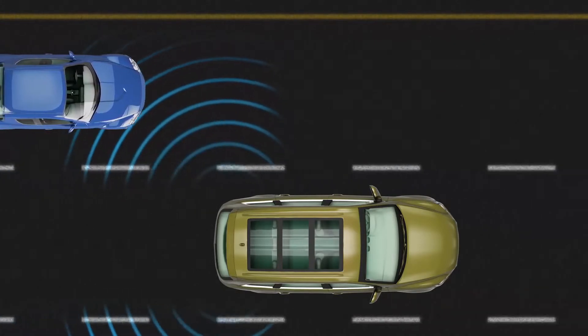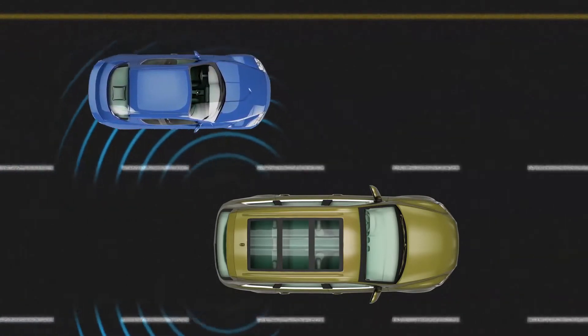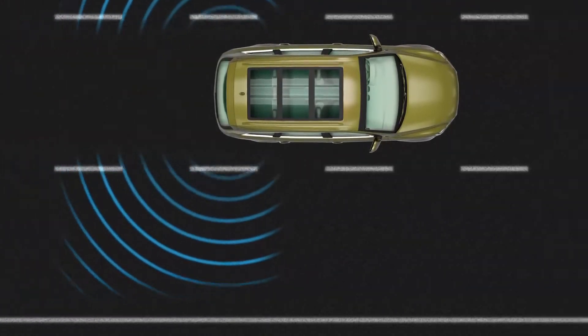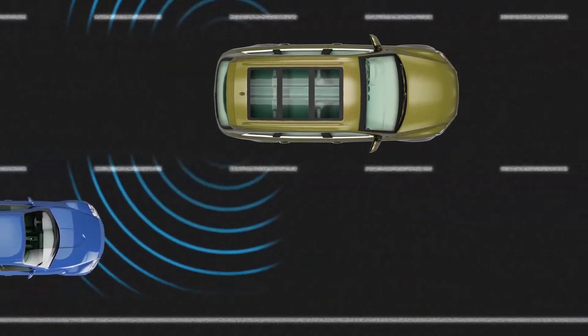The Blind Spot Monitor function helps detect vehicles traveling in the same direction in an adjacent lane that may be in the blind spot, not visible in the outside rearview mirror, and advises the driver of their existence.